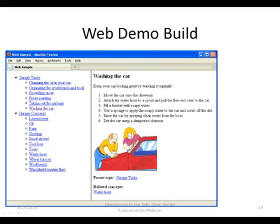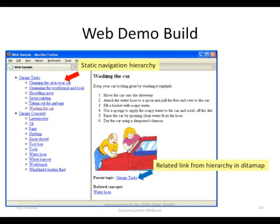This example is the sample web demo of the OpenToolkit. On the left hand side we have the navigation from the DITA map. A link to the parent topic is added at the bottom. This link comes from the hierarchy in the DITA map. A related link to another topic is shown here. This link could come from the topic itself or the DITA map.